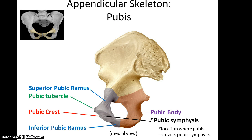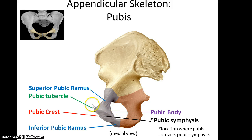The pubis bone has a superior pubic ramus that articulates with both the ilium and the ischium. It has the pubic body, and on the pubic body is a pubic tubercle and a pubic crest along the edge where the pubic symphysis will attach. And then there is an inferior pubic ramus.